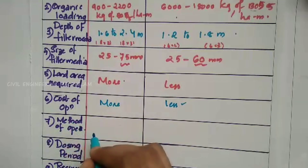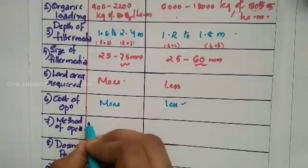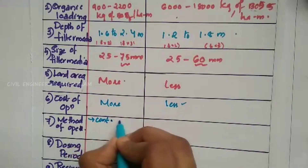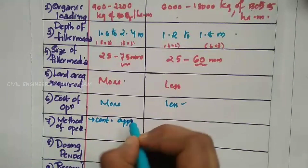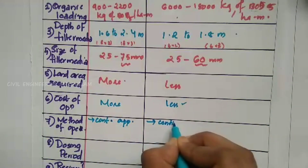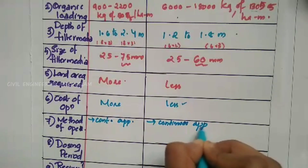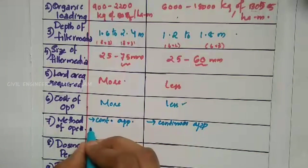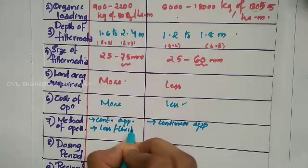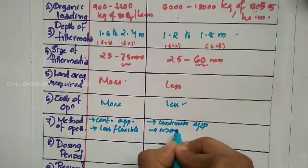The method of operation for low rate is continuous application. This video covers continuous application as a method. For flexibility, low rate is less flexible, while high rate is more flexible.